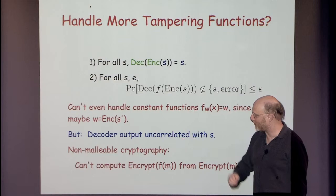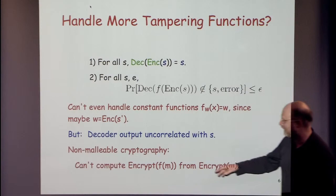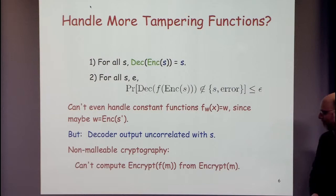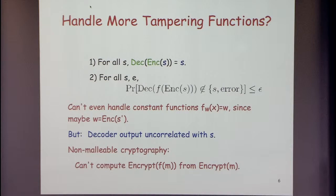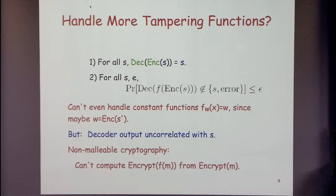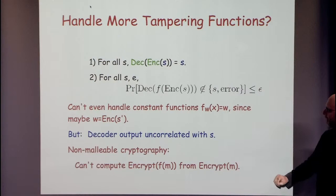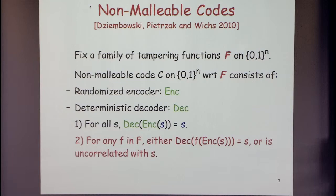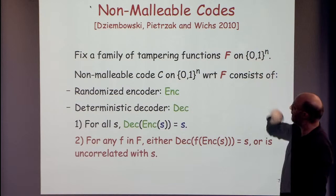There's a whole field called non-malleable cryptography, where the idea is that you can't compute the encryption of some function of a message given the encryption of that message. In contrast to textbook RSA, if you square the ciphertext, you could compute the encryption of the square of the message — that's malleable, and dangerous. Dziembowski, Pietrzak, and Wichs define non-malleable codes: for any tampering function, either the decoder outputs S or it's uncorrelated with S, so the adversary can't trick you into thinking a different message was sent.